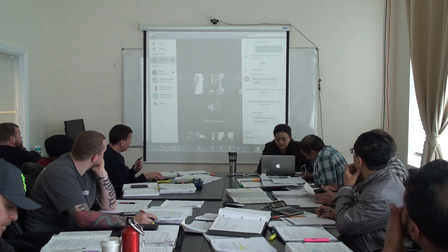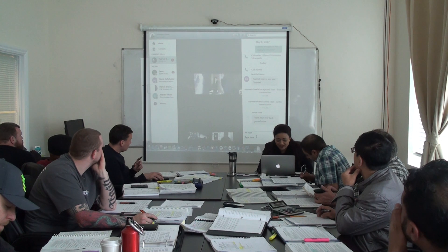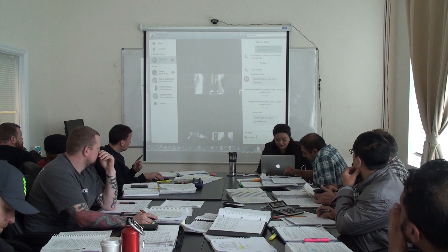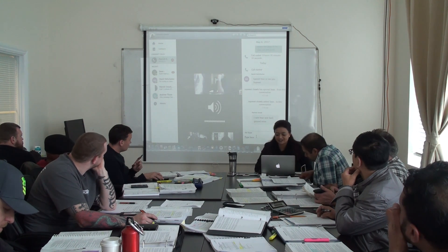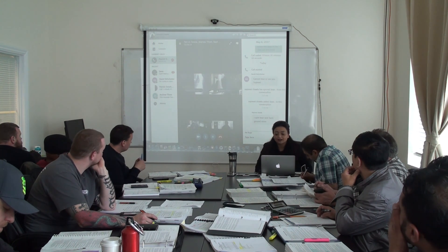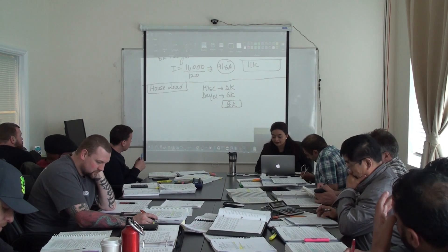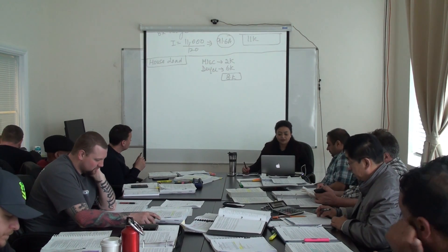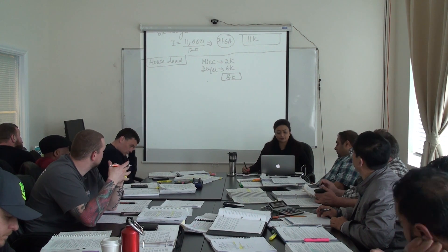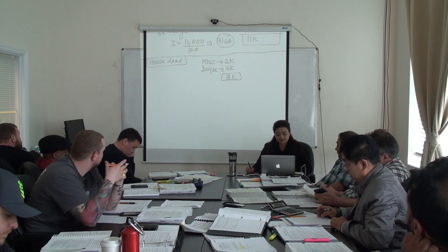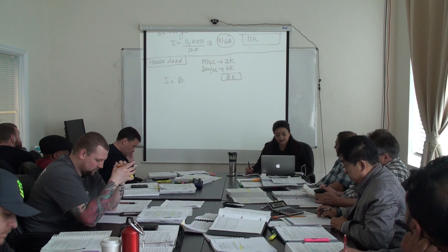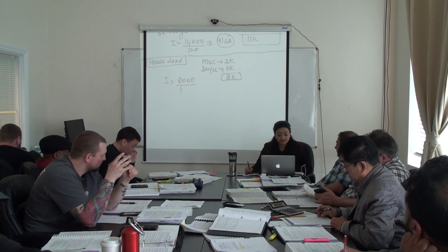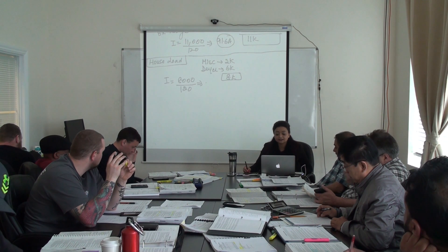Guys, one of you has a very noisy background — you have to mute because the other guys are getting disturbed. Perfect, now we can chat. So what's after? We are going to keep house load the way it is. There is no heat, it makes our life easy. Current will become 8,000 divided by 120 volts, which leads to an answer of 66.7.